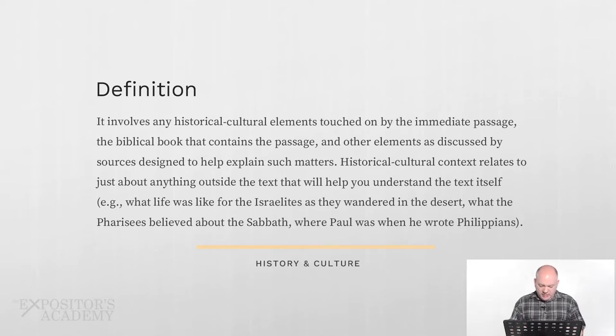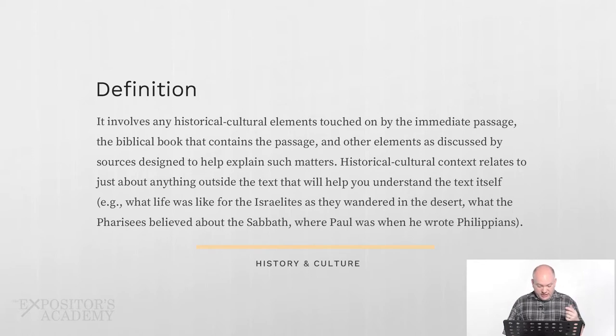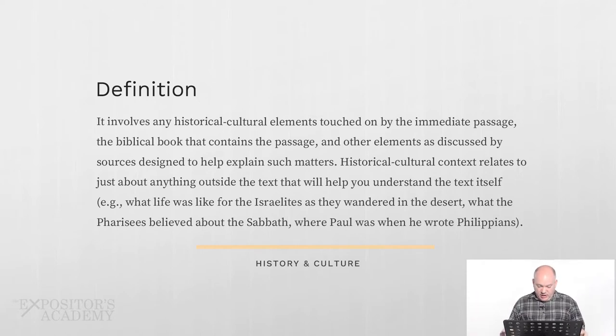When you think of history and culture, here's how I would define what we're studying. History and culture involves any historical or cultural elements touched on by the immediate passage, the biblical book that contains that passage, and other elements discussed by sources designed to help explain such matters. Historical and cultural context relates to just about anything outside the text that will help you understand what is in the text itself.